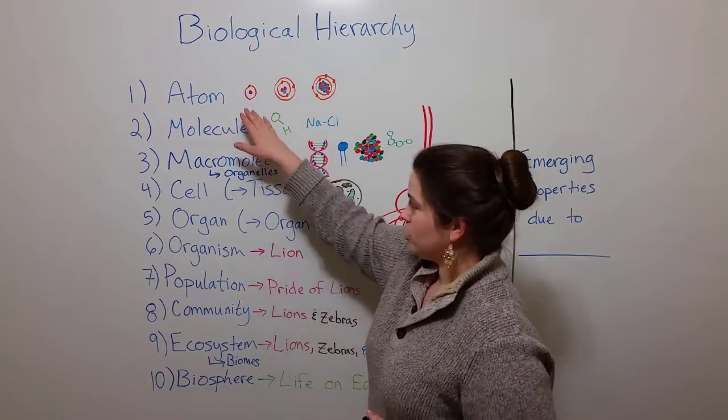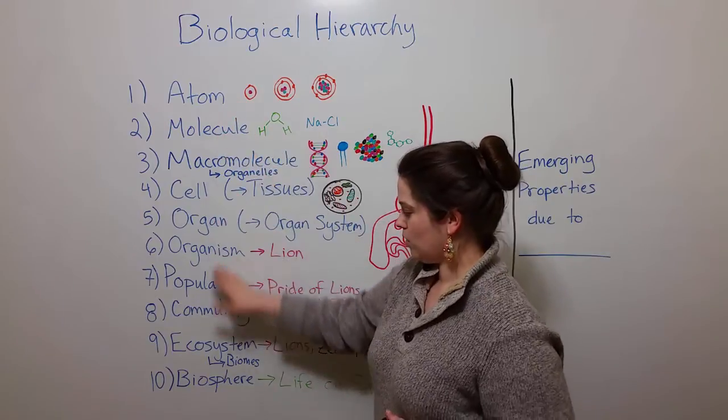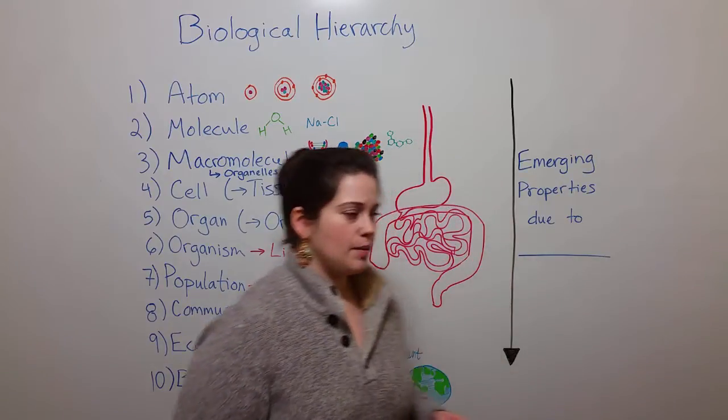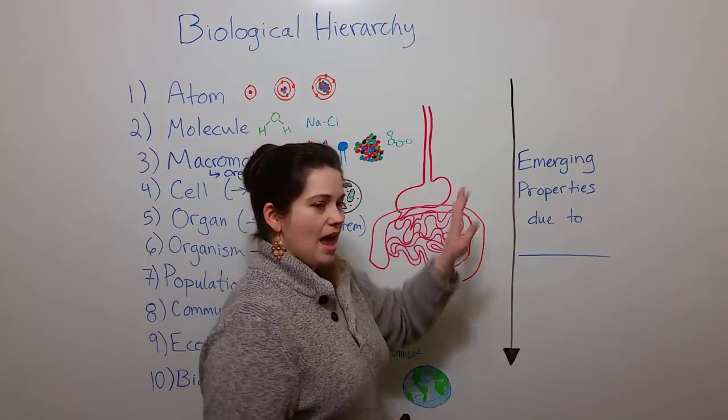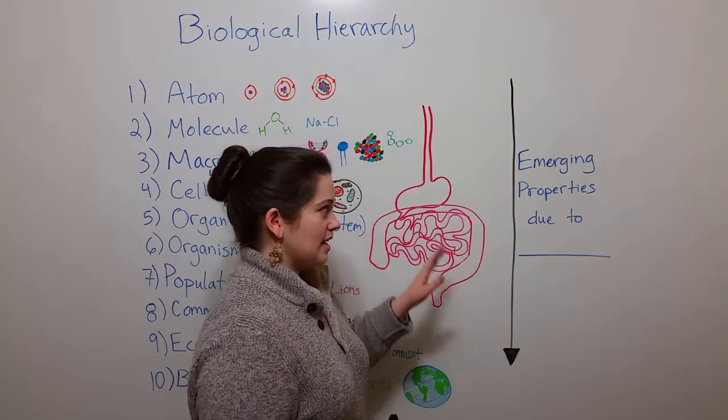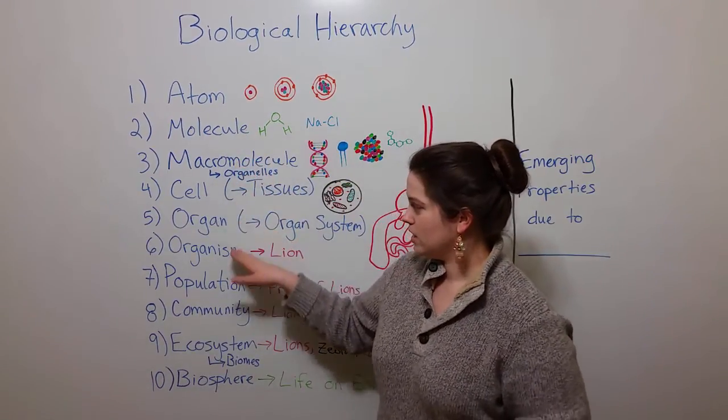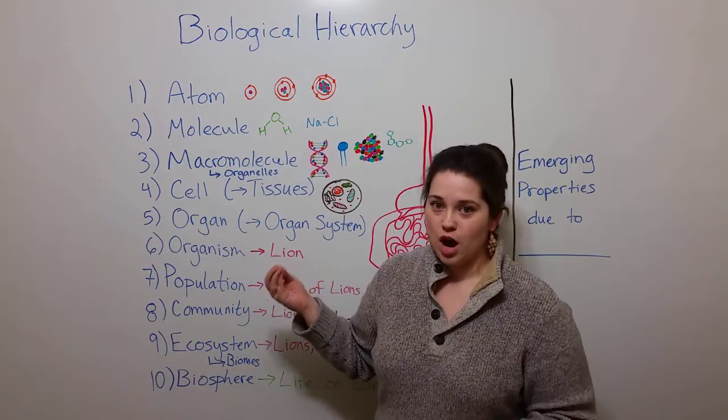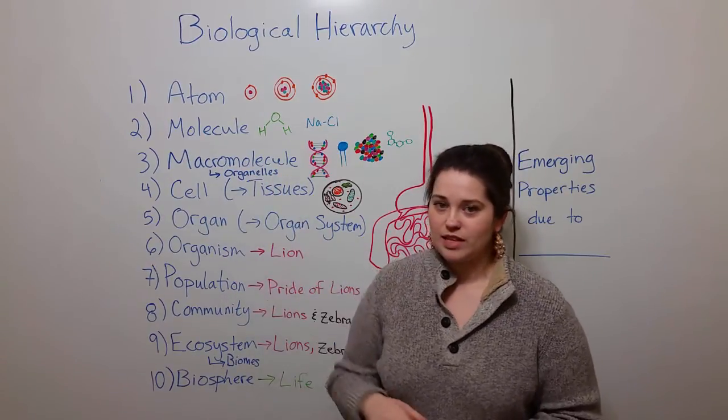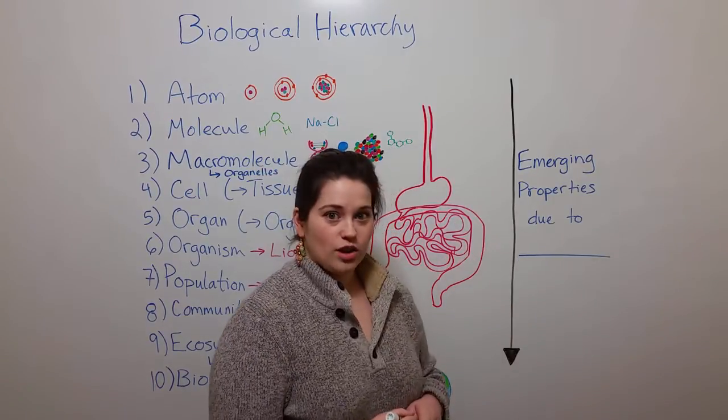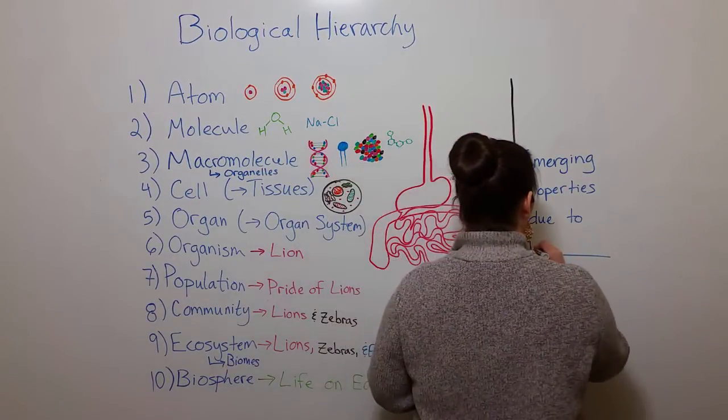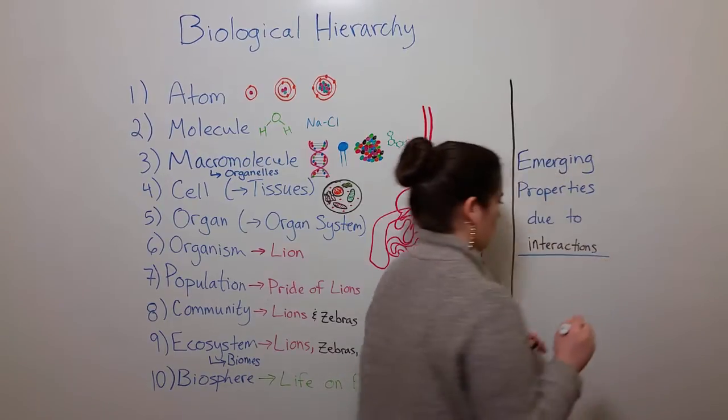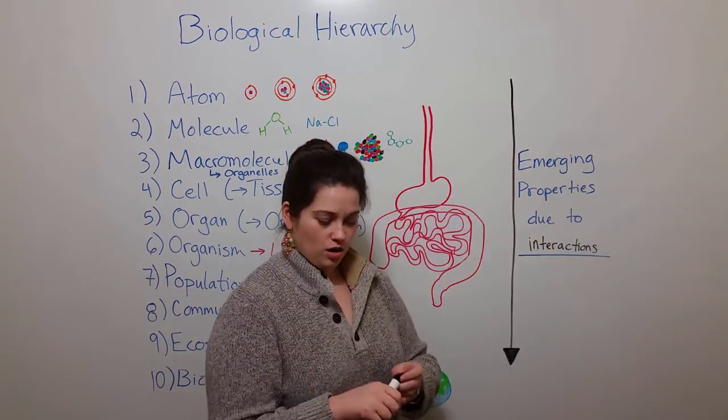And you can see that it includes multiple levels moving from the level of atoms all the way down to the biosphere. We're going to go through each one of these more specifically, but as we do I want you to think about an important concept. And that is that each one of these levels has emerging properties. That is properties that are specific to each level that were not present at the level above it. And these emergent properties are due to interactions. So it is these interactions that are critical for life.